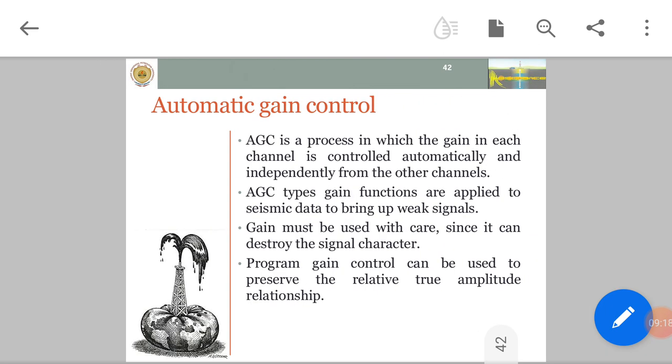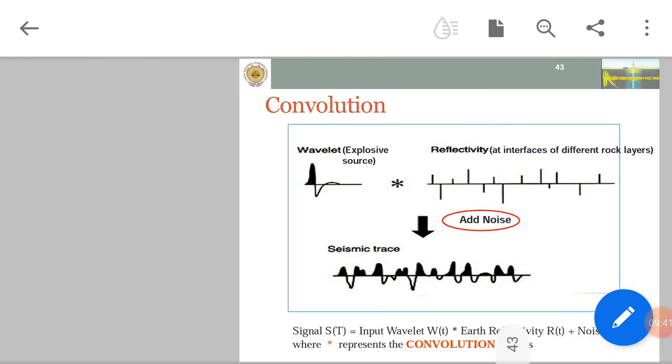Automatic gain control is a rolling window operation. AGC is a process in which gain in each channel is controlled automatically and independently from other channels. AGC type gain functions are applied to seismic data to bring up weak signals. Gain must be used with care as it can destroy signal character. Program gain control can be used to preserve relative true amplitude relationship.